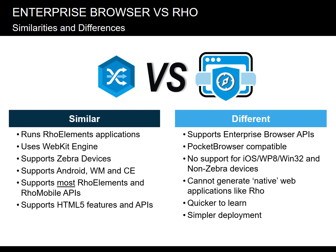Rho is a complex framework with lots of features, so naturally it takes a while to learn it all. Enterprise Browser is quicker to learn when you need to deploy simpler projects, likewise when it comes to deployments.